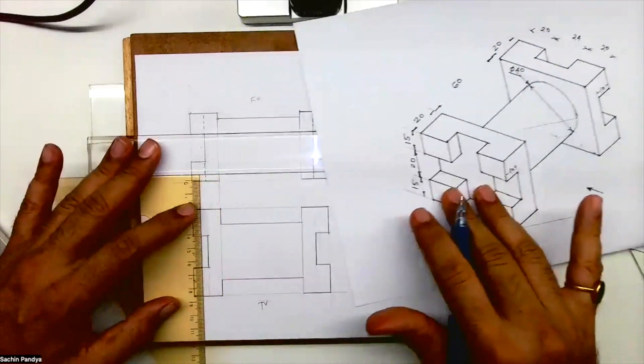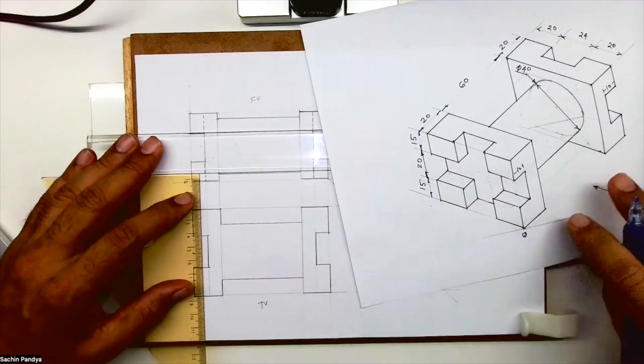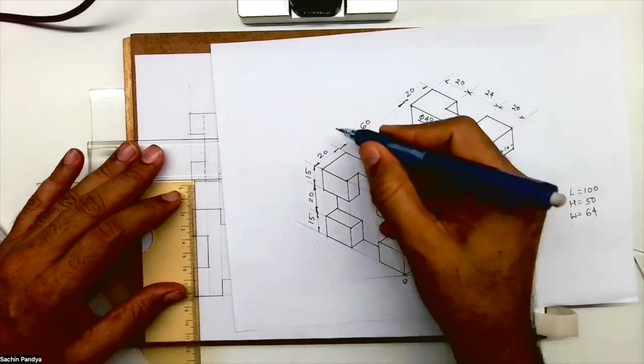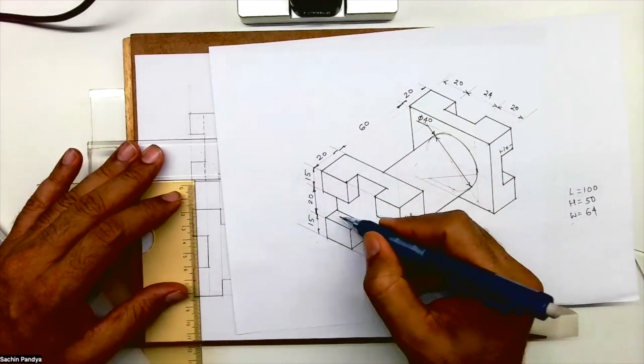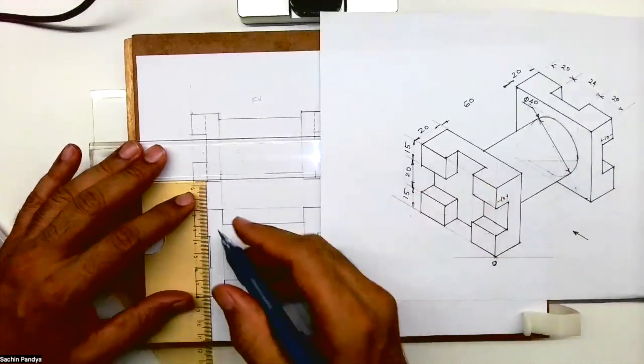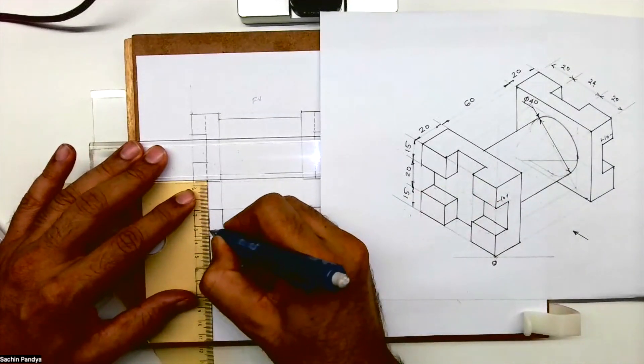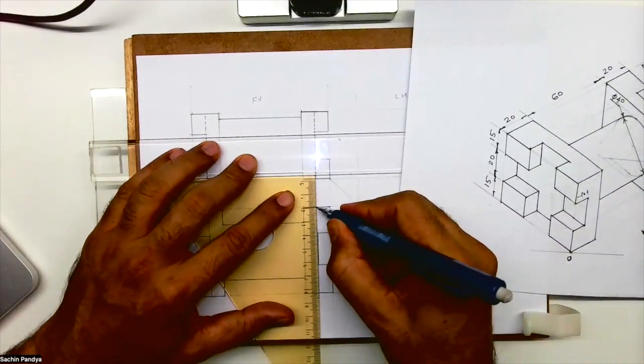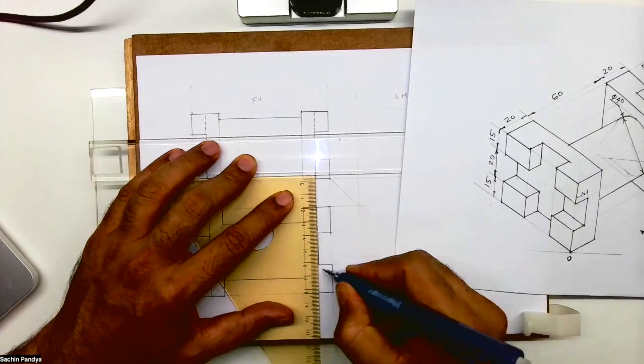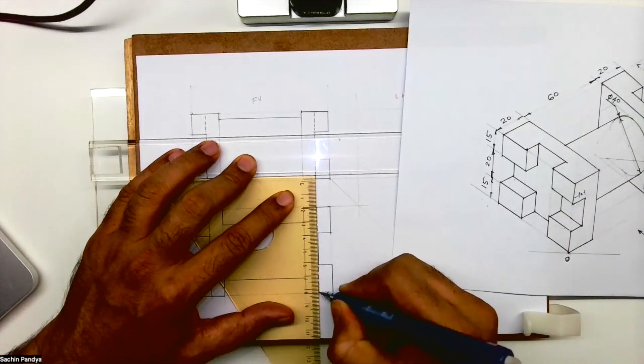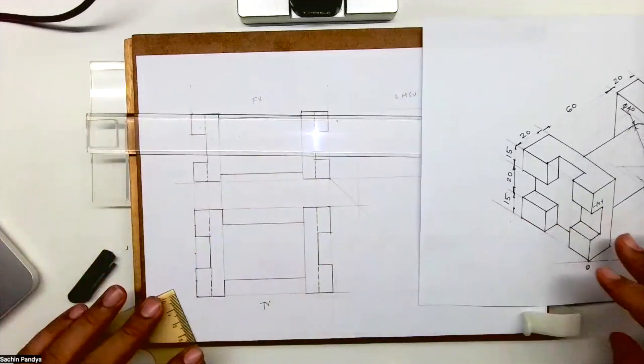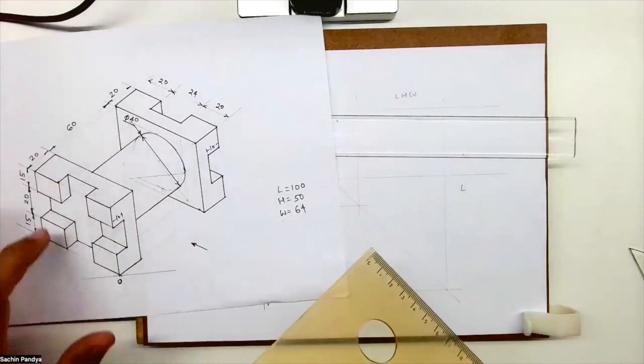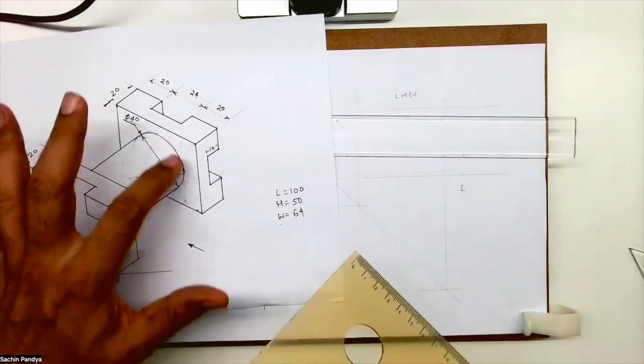Now I need to draw side view. Wait, we need to draw dotted lines - this part which you can't see when you see from the top. When you see from the side, you see one-two-three-four rectangles and this circle will appear dotted.